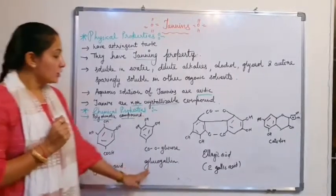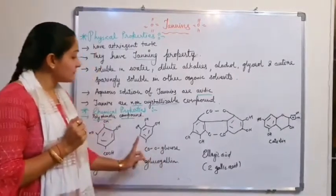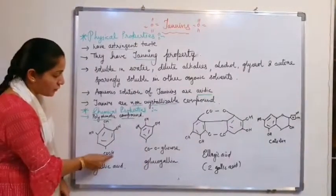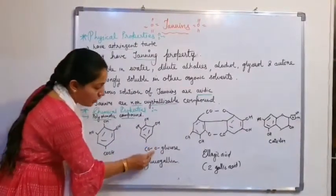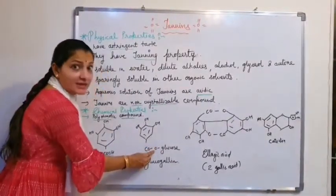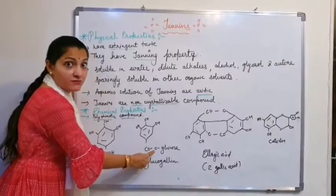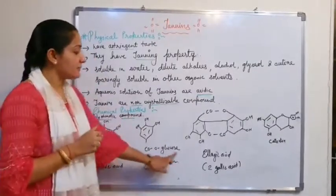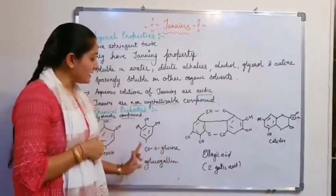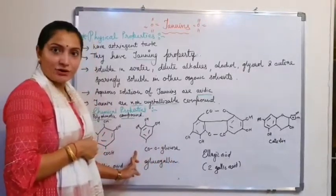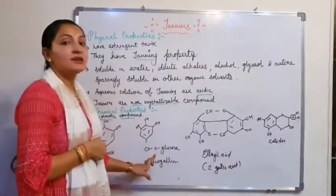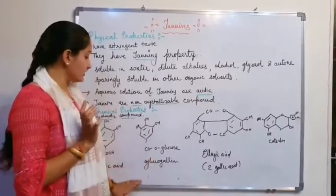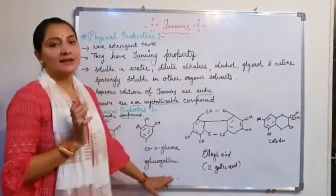Glucogallate means on a gallic acid, removal of OH and with the help of oxygen, a glycosidic linkage is formed — which has already been discussed in glycosides — comprising a glycon part, an aglycon part, and oxygen which helps form the glycosidic linkage.